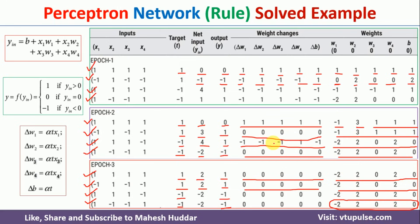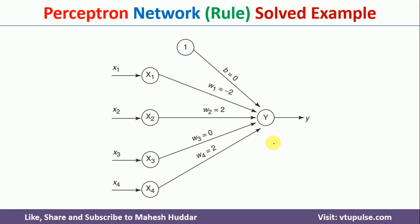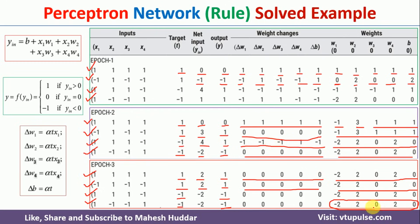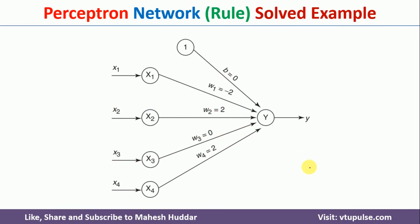These become the final weights that correctly classify the given data. We draw the final neural network: w1 = -2, w2 = 2, w3 = 0, w4 = 2, and bias b = 0. This is the neural network obtained using the perceptron learning rule to classify the given data properly.